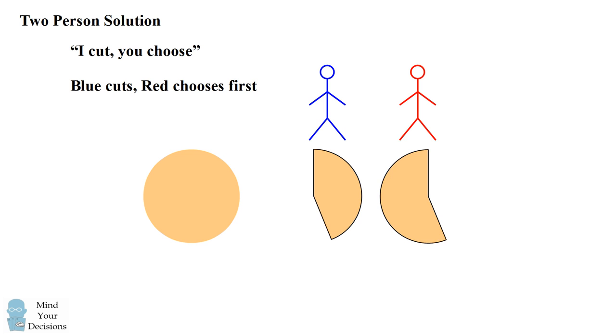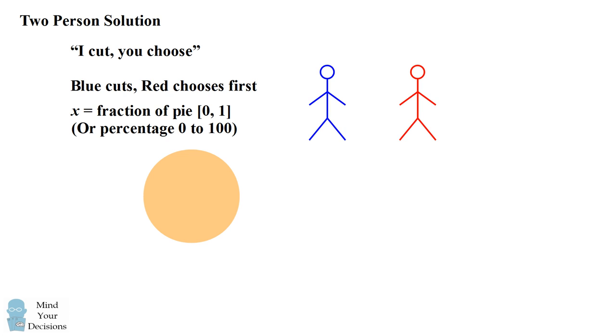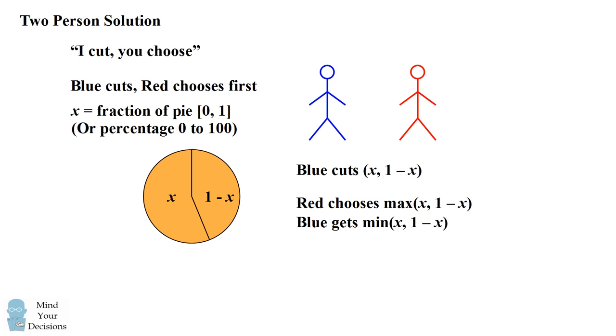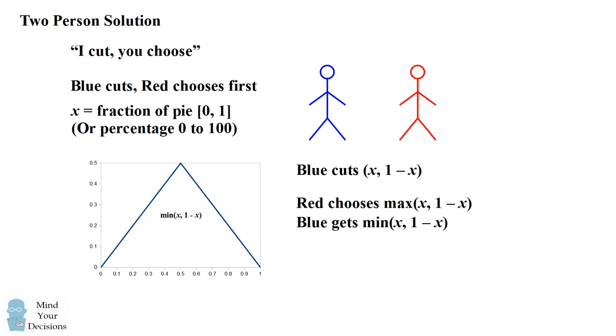Let's prove this mathematically. Imagine that x is the fraction of the pie that goes from 0 to 1, or it's a percentage 0 to 100%. So blue cuts the cake into two slices, x and 1 minus x. Red is going to pick the larger of the two pieces written as the maximal function of x and 1 minus x. This will leave blue with the minimal of the two values x and 1 minus x. Now blue wants to get the largest piece possible, so blue is going to look at the graph of x and 1 minus x being minimal, and then choose the largest value of this graph.